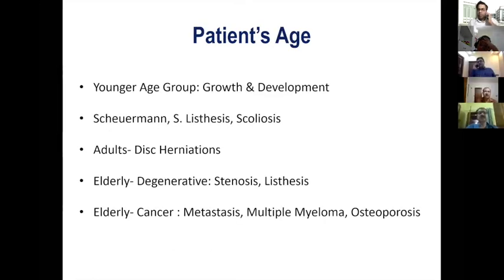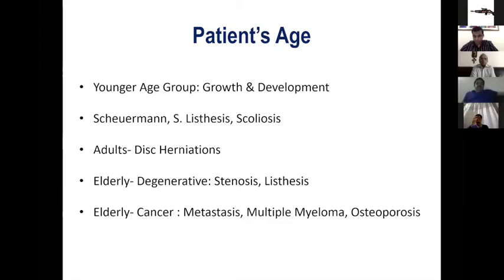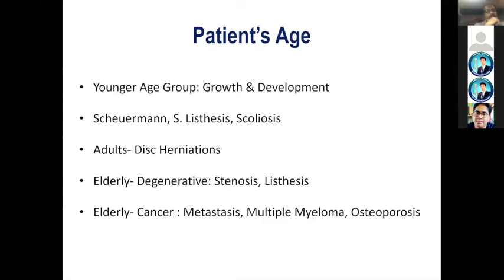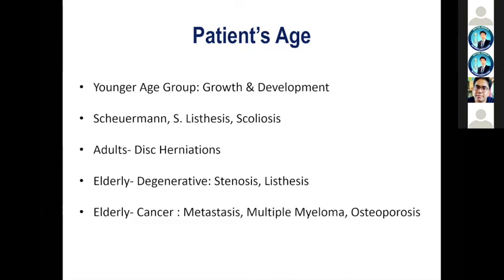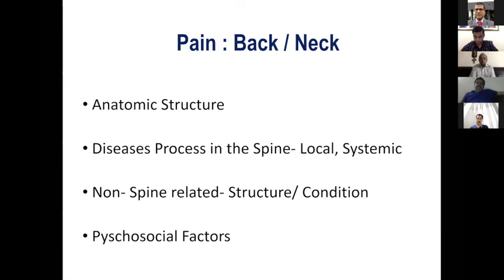Patient age is very important when taking history. In the young group, most problems will be related to growth and development — for example, Scheuermann's disease, spondylolisthesis, or scoliosis. In young adults, disc herniation is very common. In the elderly, we will have degenerative scoliosis, degenerative stenosis, or degenerative listhesis. We also have to be very careful of metastasis in elderly patients, as it is one of the commonest tumors in the spine. Multiple myeloma is also very common, and elderly patients can also have fractures due to osteoporosis.